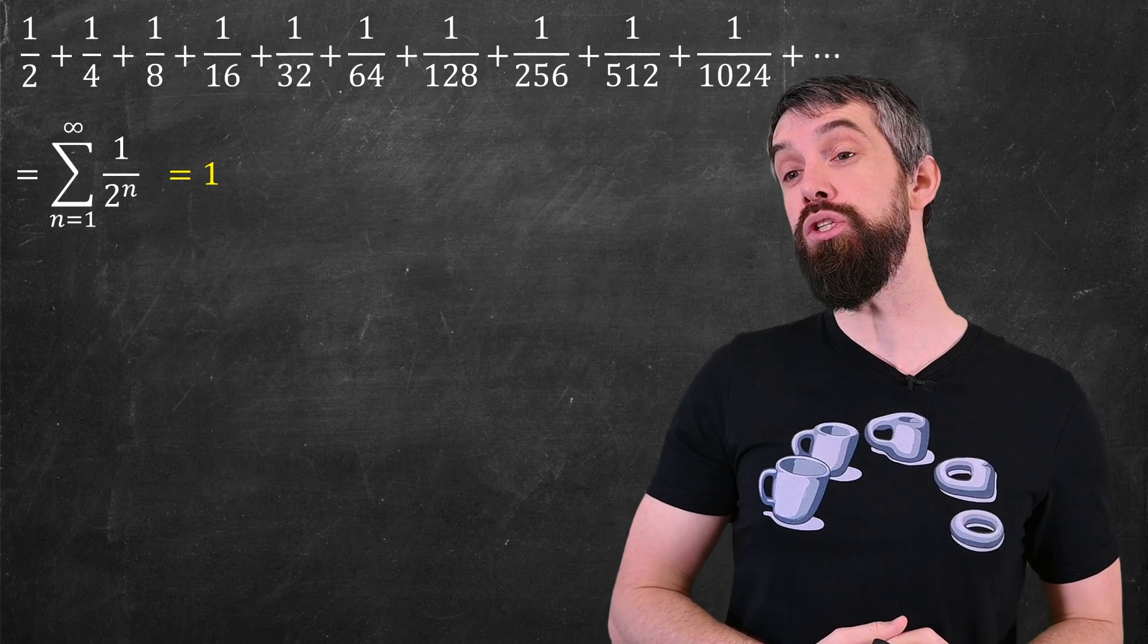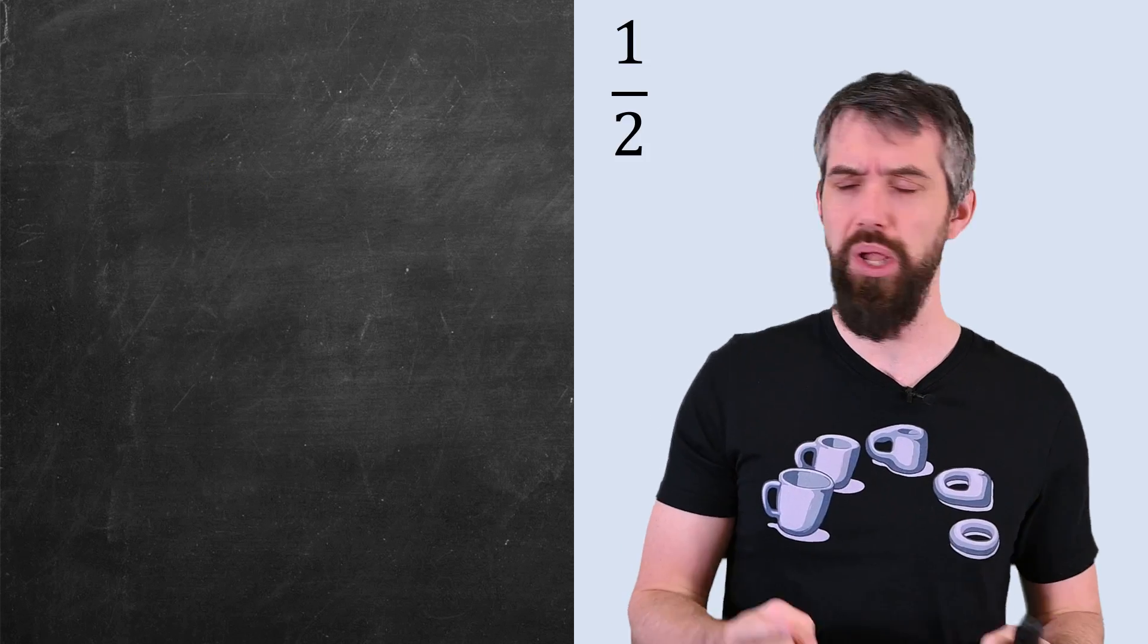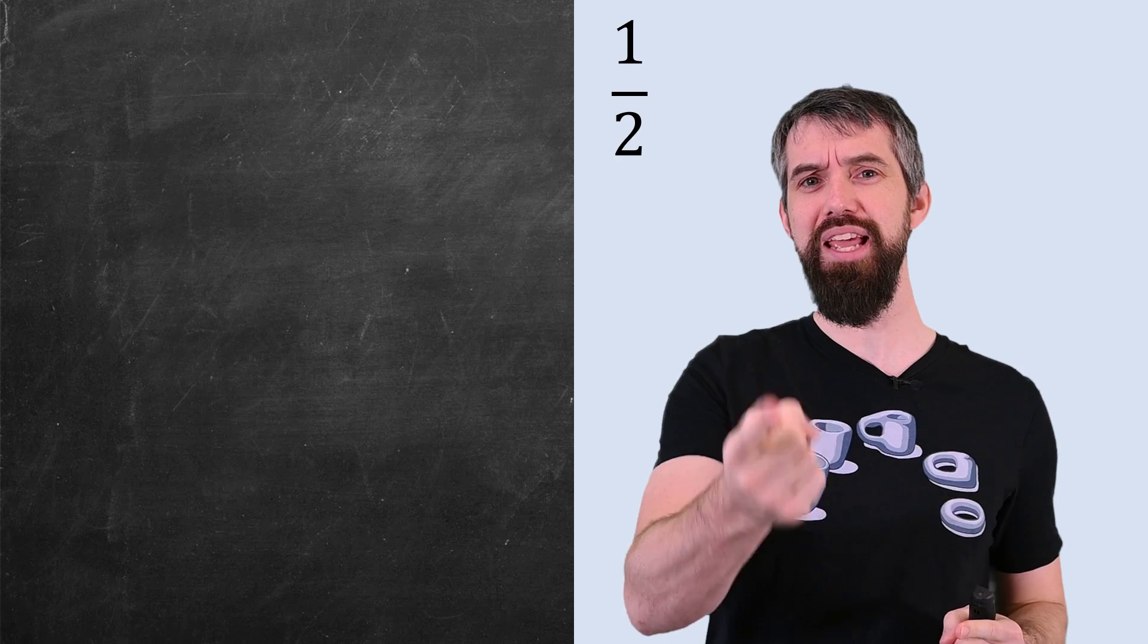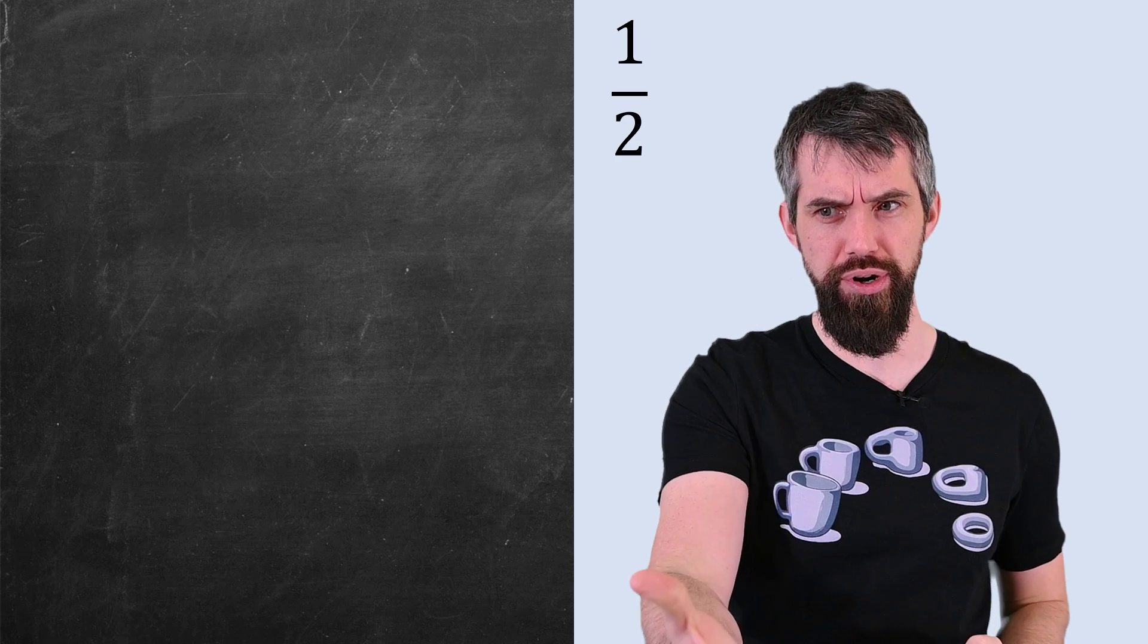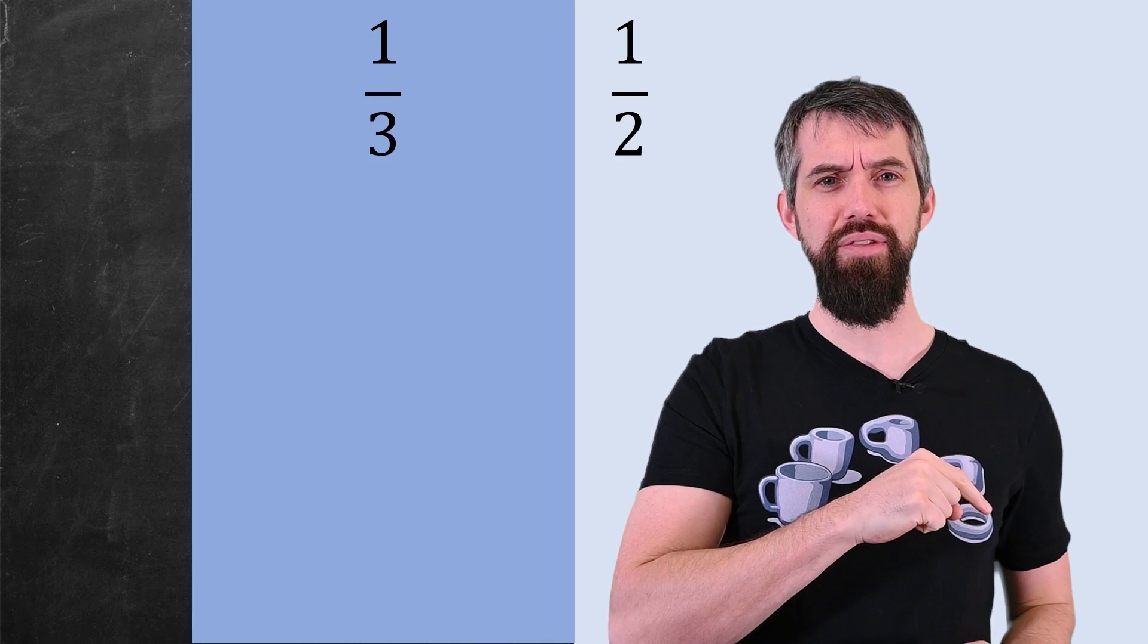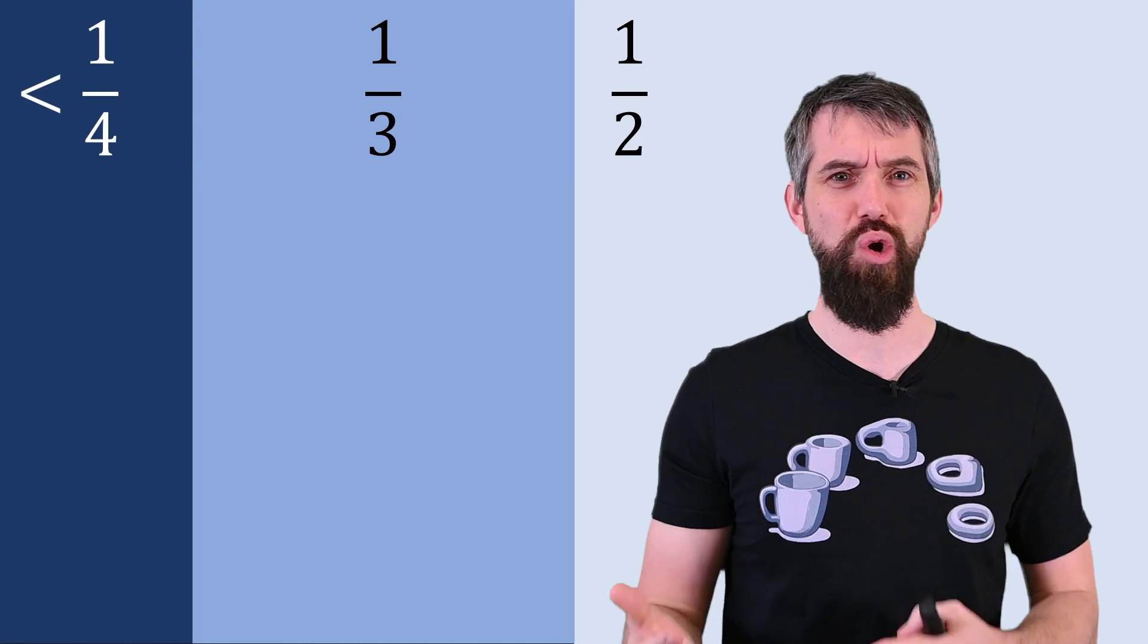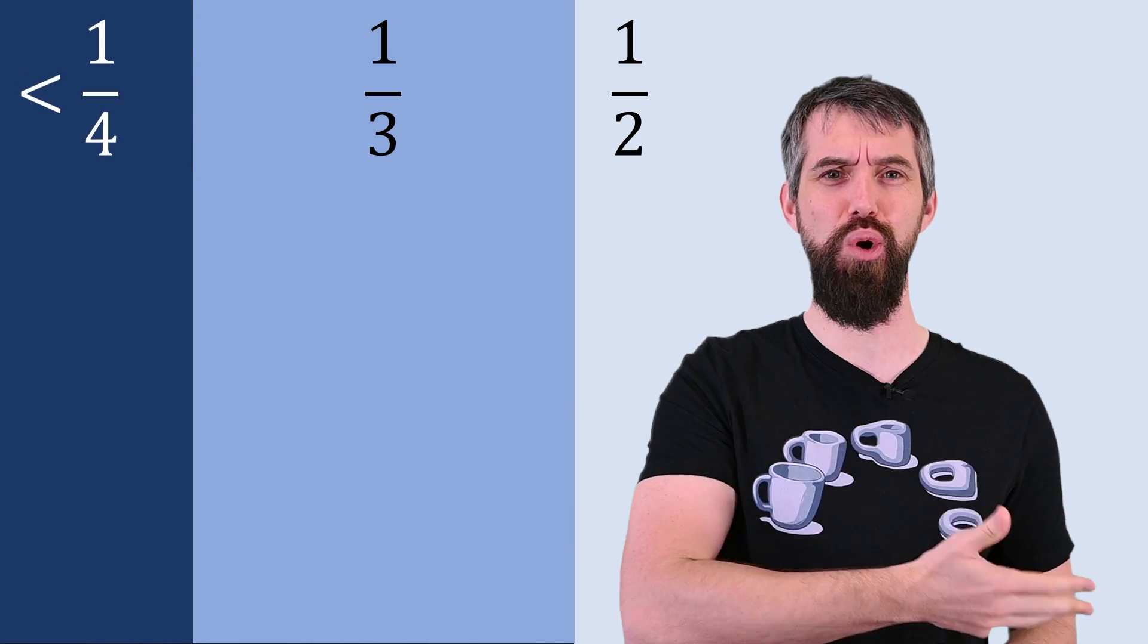However, many series don't converge. Like, for example, if I took a half and then instead of taking a quarter, I took a third of the original area, the stuff that's remaining is actually less than a quarter, and with just a half plus a third plus a quarter, you get to more than the screen area.